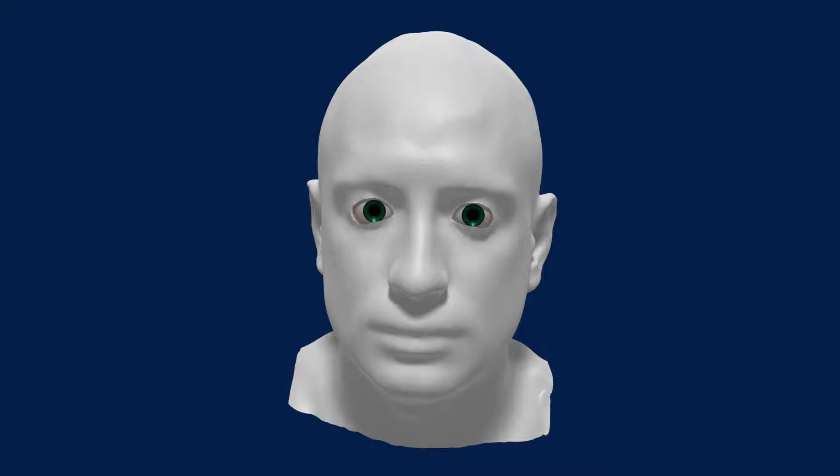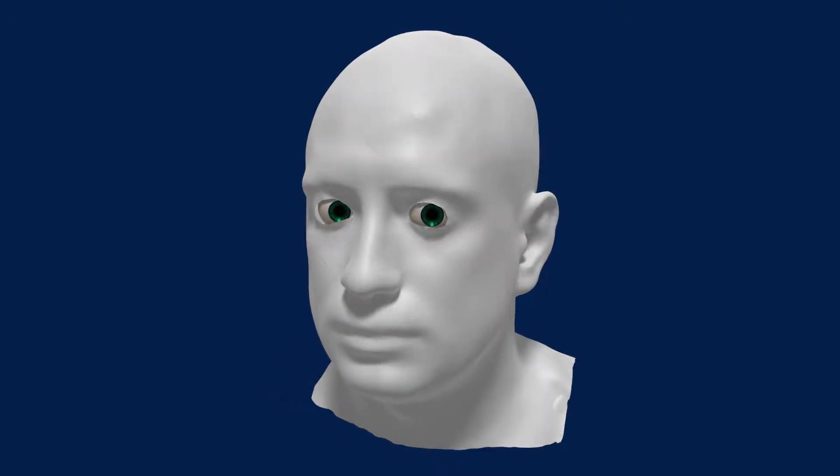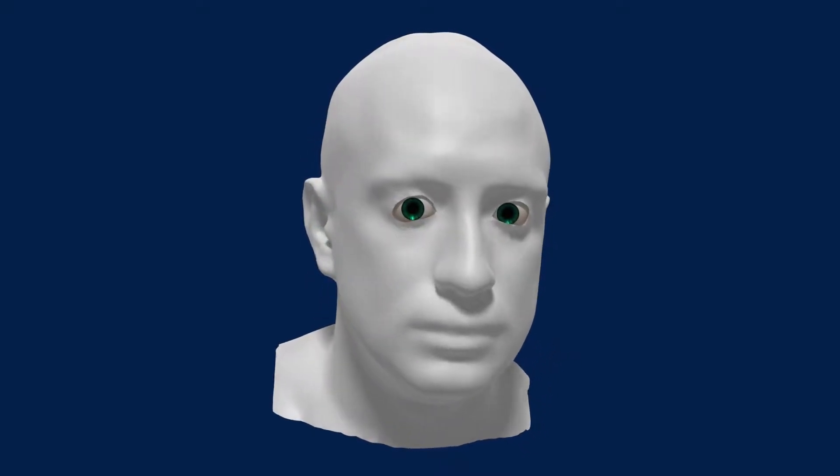These signals let our brain sense rotations directly, but they're also sent straight to the eye muscles to allow the eyes to correct for the rotation. This is called the vestibulo-ocular reflex.